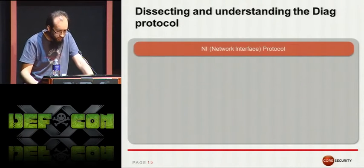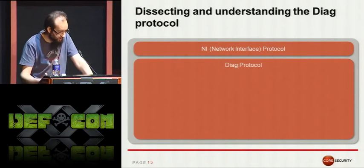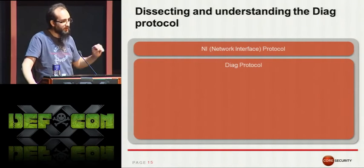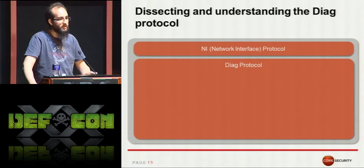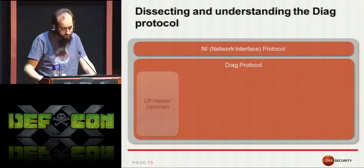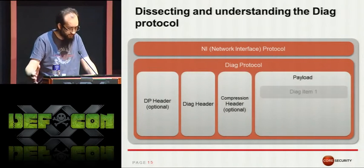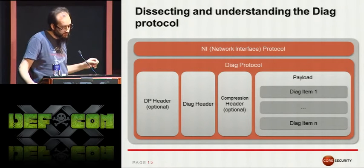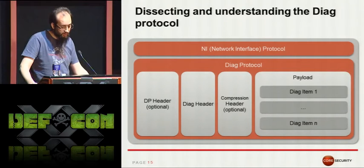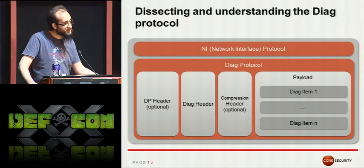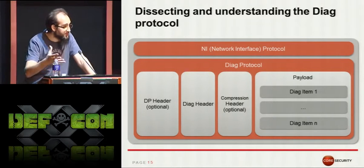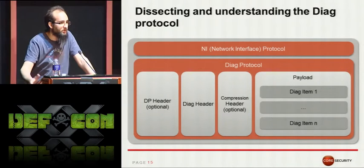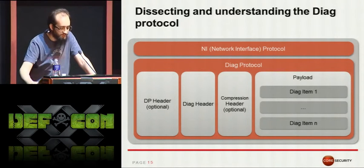Let's see how a regular DIAG packet looks like. First is the Network Interface protocol — only a 4-byte header that contains the length of the remaining payload. The DIAG protocol is composed by different headers and the payload itself. There's one optional header used only during initialization — the DP header. Then you have the DIAG header, which carries information about the communication. The compression header, which is also optional and only present when the payload is compressed. And the payload itself, which carries all the relevant information — all the screen data — and is composed of a variable number of different items.